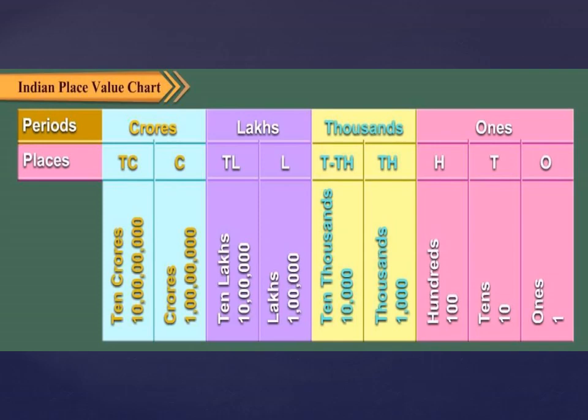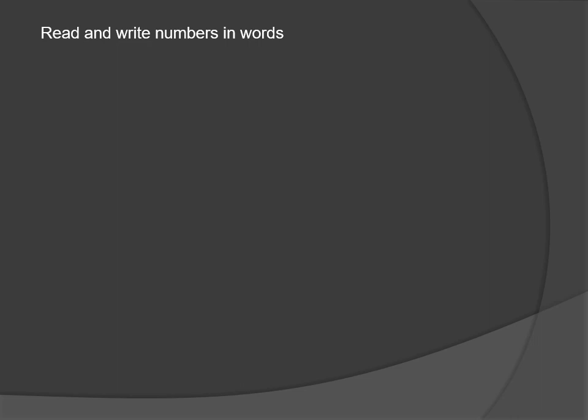We read the place value chart from left to right. From the right, the first three places form the ones period — ones, tens, and hundreds. The next two places form the thousands period. The next two places form the lakhs period — lakhs and ten lakhs. The next two places form the crores period — crores and ten crores. While reading numbers, all digits in the same period are read together with the name of that period. While writing numbers, we put a comma after every period to separate them, which helps us read the number easily.